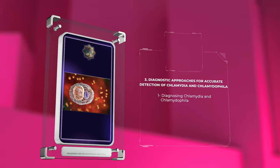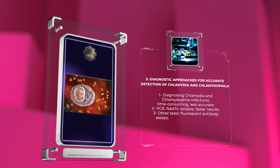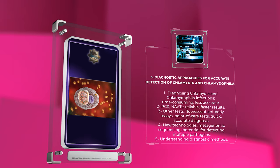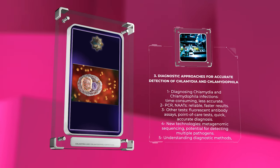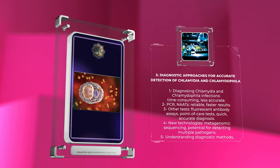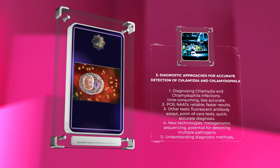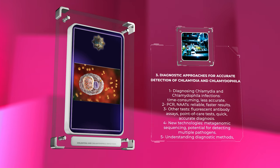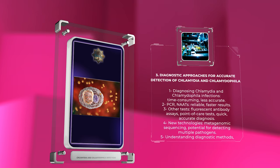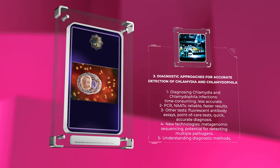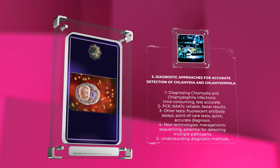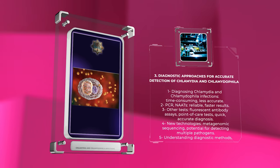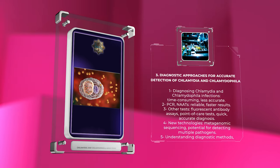Understanding the immune response is important for developing treatments and vaccines. In the past, diagnosing chlamydia and chlamydophila infections was time-consuming and less accurate. But now, PCR and NAATs provide reliable and faster results. Other tests like fluorescent antibody assays and point-of-care tests also help with quick and accurate diagnosis. New technologies like metagenomic sequencing show potential for detecting multiple pathogens. Understanding these diagnostic methods is important for managing these infections effectively.